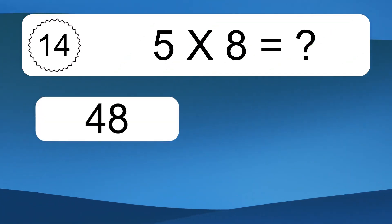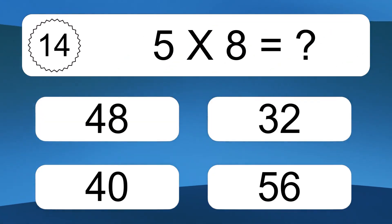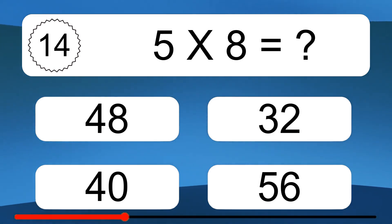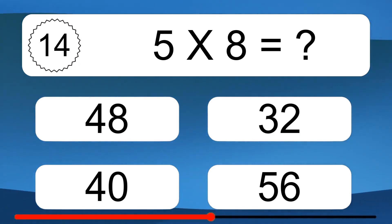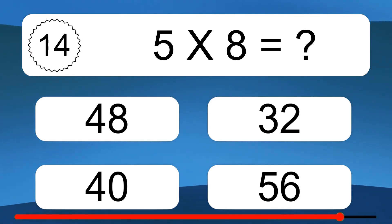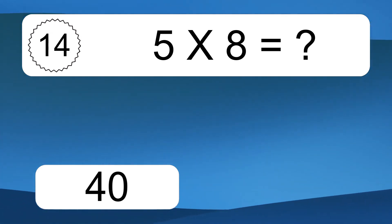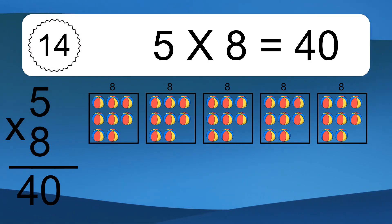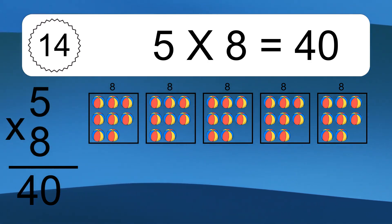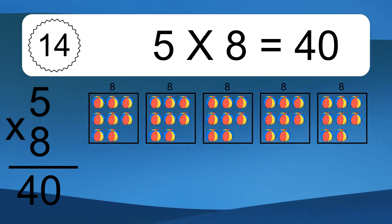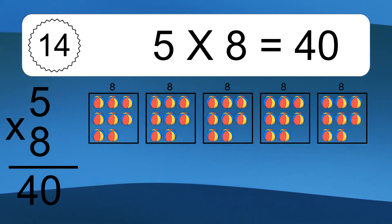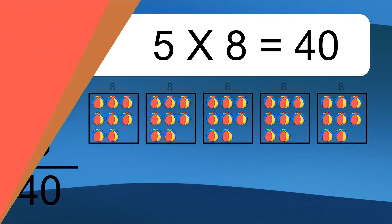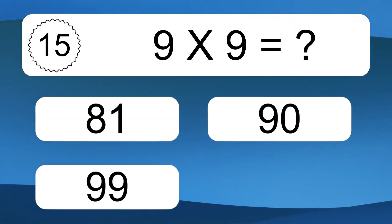5 times 8 equals 40. We have 5 boxes and each box has 8 colorful balls inside. If you count all the balls in all the boxes together, you will have 5 times 8 balls. This equals 40 balls.